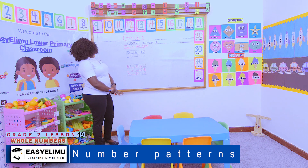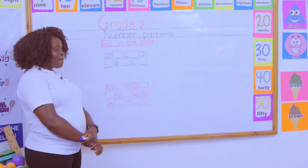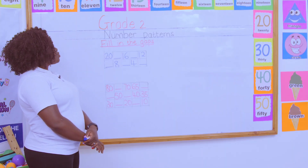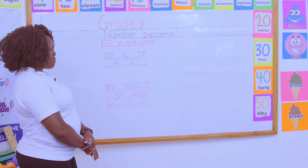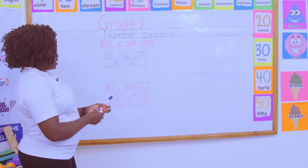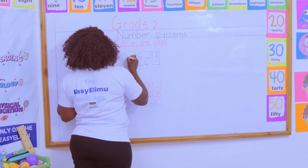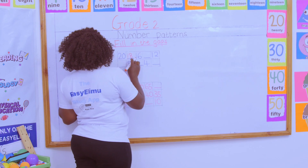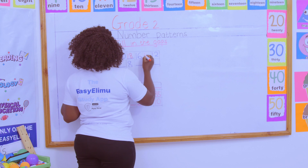For example, mine starts with 20. Are we counting forward or backward? Backward. So which number comes before 20? The number before 20 is 18 — very good. So we have 20, 18, 16, then after that 14.